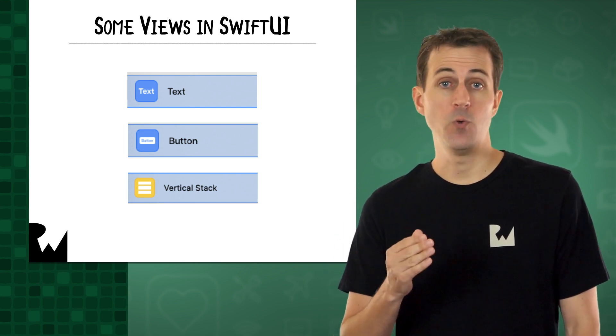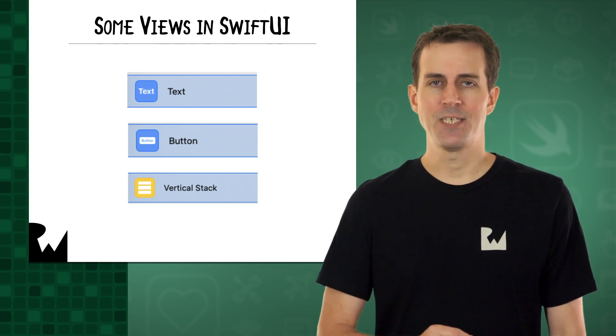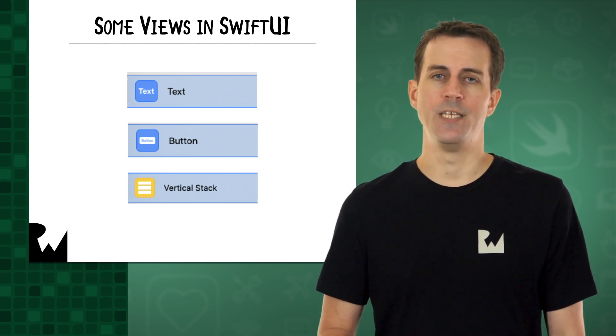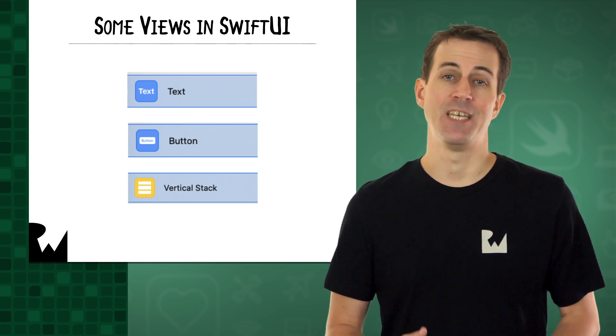So far, you've worked with a few different types of views. First, there is text. Text is a view that displays one or more lines of read-only text. The welcome-to-my-first-app message is a text view.